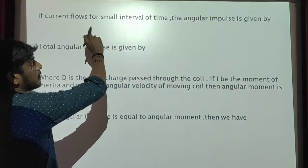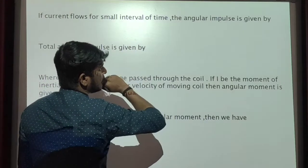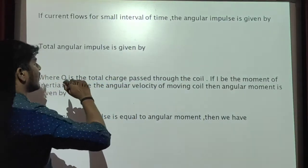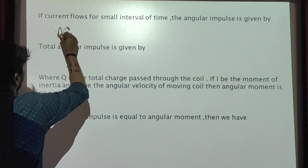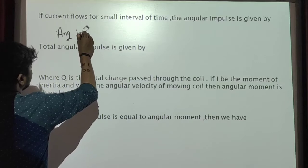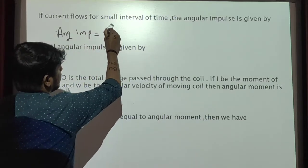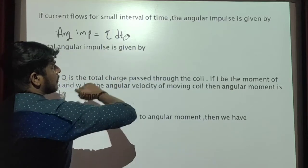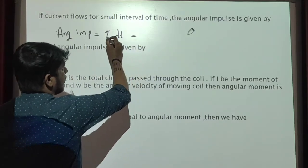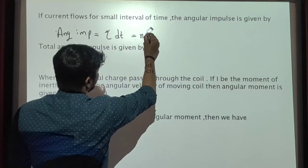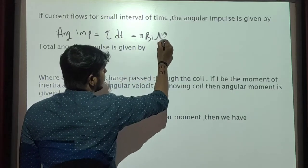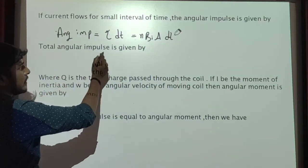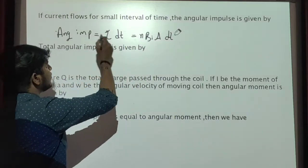If current flows for a small interval of time, the angular impulse is given by: angular impulse equals torque (τ) into dt, where dt is the small period of time. This is the torque, and we have already calculated it. It is given by N into B into I into A into dt. The total angular impulse is given by integrating the angular impulse.